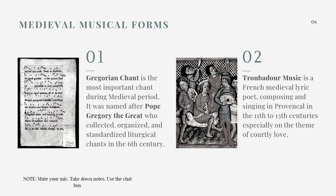Another type of music from the medieval period is what we call troubadour music. The word troubadour refers to a person or a performer. Troubadour music features a French medieval lyric poet composing and singing in Provencal, France, during the 11th to 13th century. Their theme is especially about courtly love. Towards the end of the medieval period, music was no longer purely sacred, because troubadour music was introduced, which is secular.